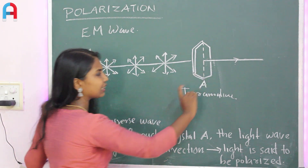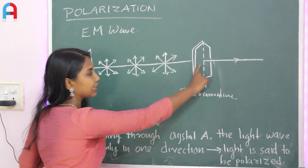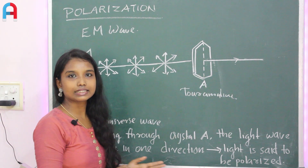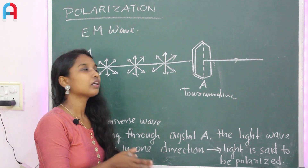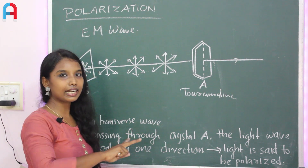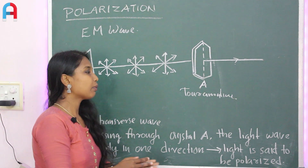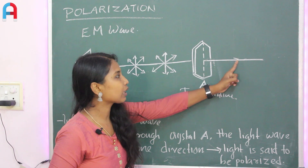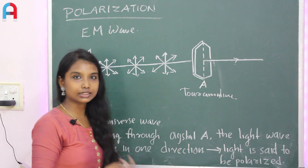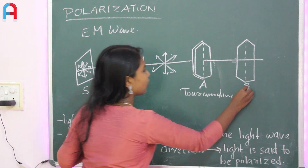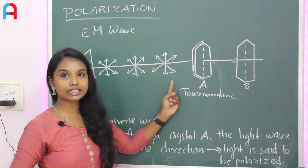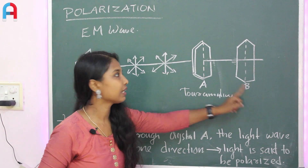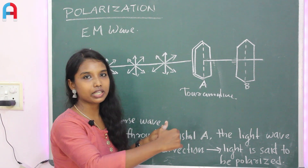Now we rotate this crystal. Instead of two slits S1 and S2, we put a crystal here in their place. We use crystal A and crystal B positioned along the path of the wave.